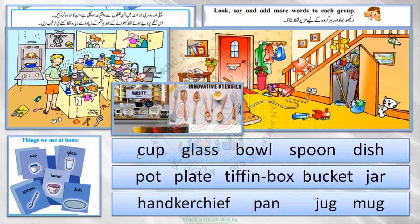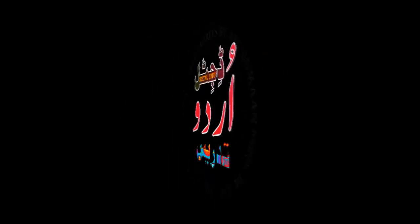You can add more to your book. Because this is revision, here we can add some things. Cup, glass, bowl, spoon, dish, pot, plate, tiffin box, bucket, jar, handkerchief, pan, jug, mug. Very good! Cup, glass, bowl, spoon, dish, pot. Very good!